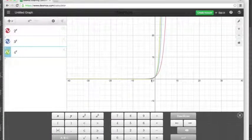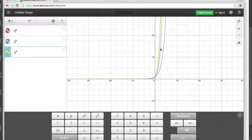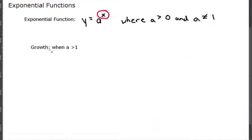Growth is when a is greater than one, so when your constant is greater than one. Let's take two for example. Two to the first is just two, two squared is two times two.